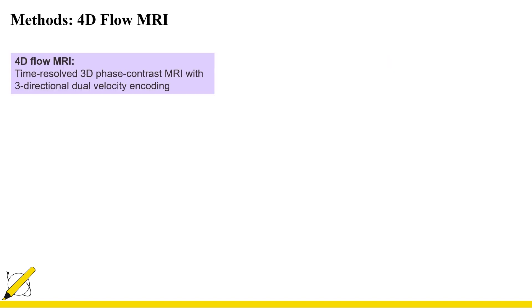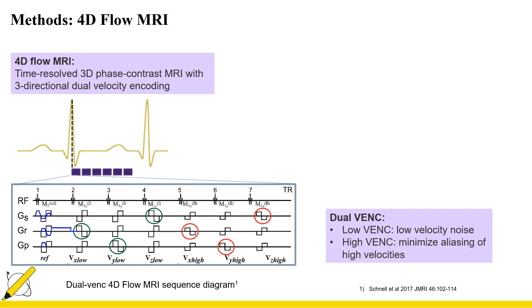4D flow MRI is time-resolved, three-dimensional phase contrast MRI with three-directional velocity encoding. We applied the method called dual-VENC 4D flow MRI, which provides higher SNR and velocity dynamic range needed for measuring slow and fast flow simultaneously in stenotic arteries. Two sets of three-directional velocity data are collected: low-VENC and high-VENC. The low-VENC acquisition has high sensitivity to low velocities but is limited by velocity aliasing artifact. The high-VENC acquisition has no aliasing artifact but cannot resolve low velocities due to high noise level. In the dual-VENC approach, these two acquisitions are combined into a single dataset by using the high-VENC data to correct aliasing in the low-VENC data.